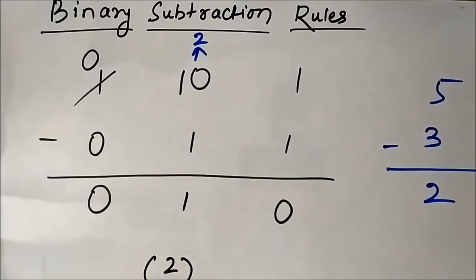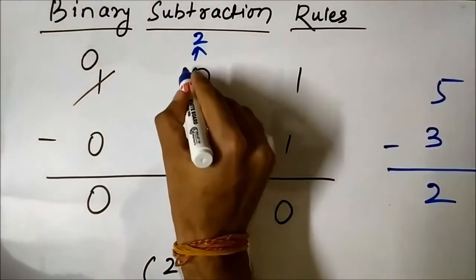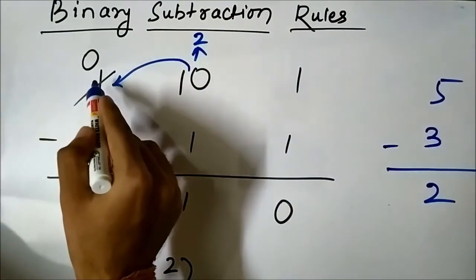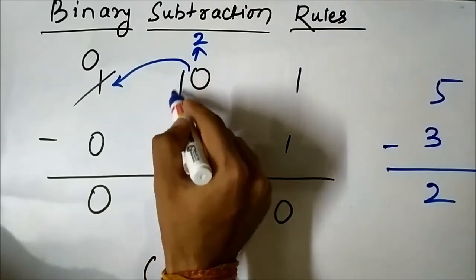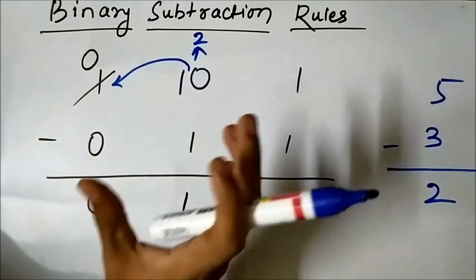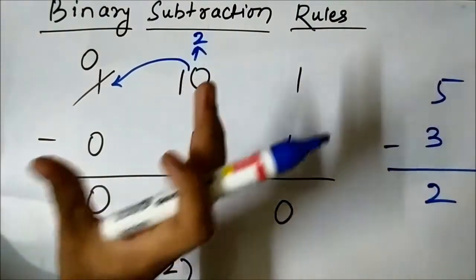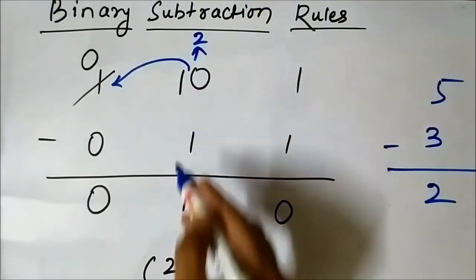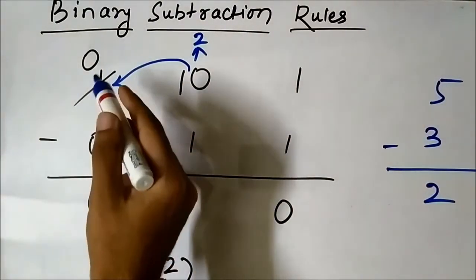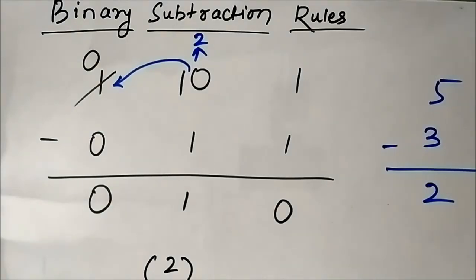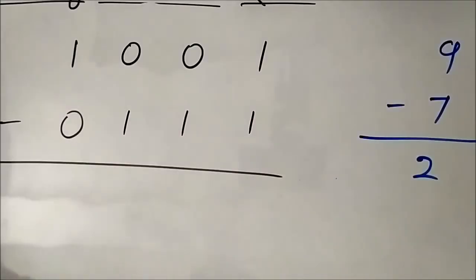To understand the borrow operation: this 0 bit inquires with its neighboring 1 bit and asks it to give its 1 bit. After giving, the 1 bit becomes 0, and the 0 bit becomes 1 0. Treat this 1 0 as the decimal number 2. Then perform 2 minus 1, which equals 1. The bit that donated is cancelled and becomes 0, so the next position is 0 minus 0 equals 0. The answers in binary and decimal are the same.